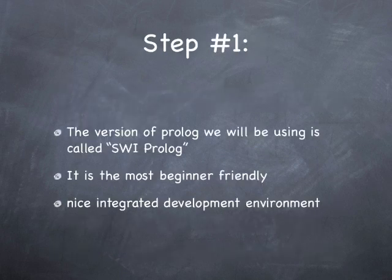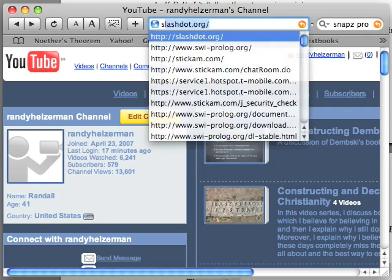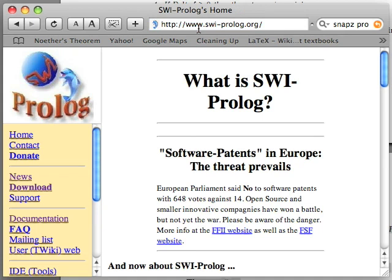So, step number one. Let's go download a version of Prolog. The version of Prolog that we're going to be using in this course is SWI Prolog. It's the most beginner-friendly and it has a really nice integrated development environment. To download SWI Prolog, just take your web browser, which of course is pointing to Randy Helzerman's channel, and go to this URL, swi-prolog.org.